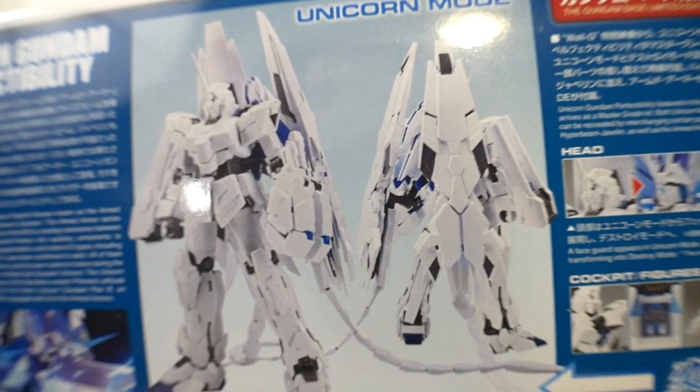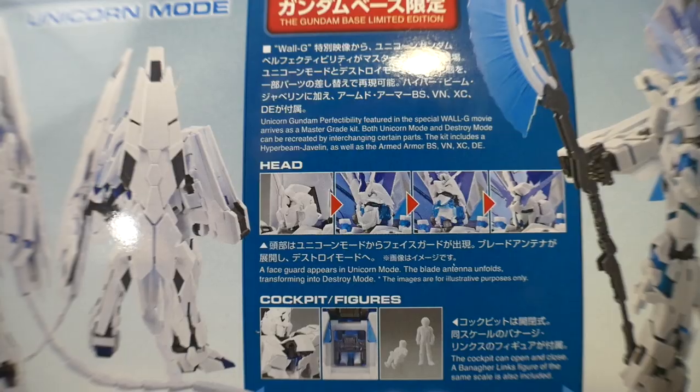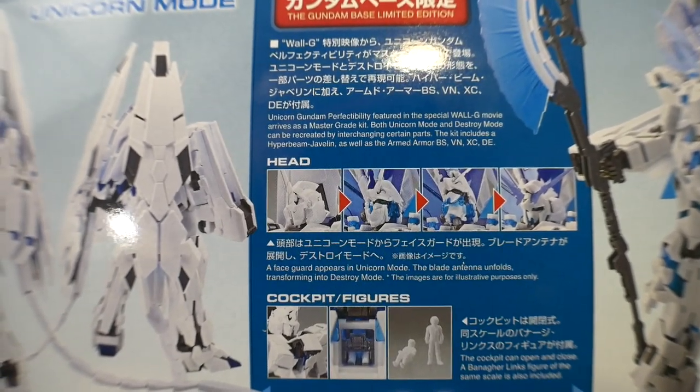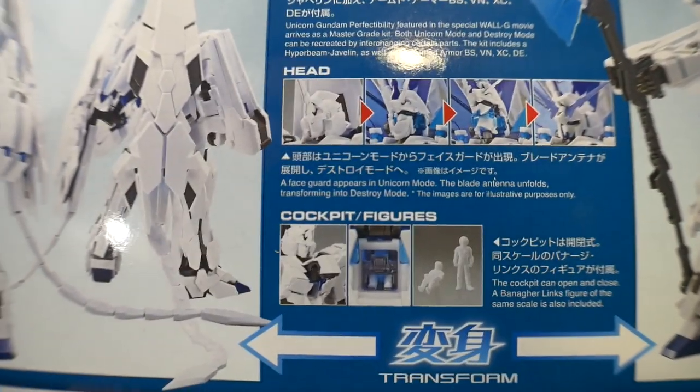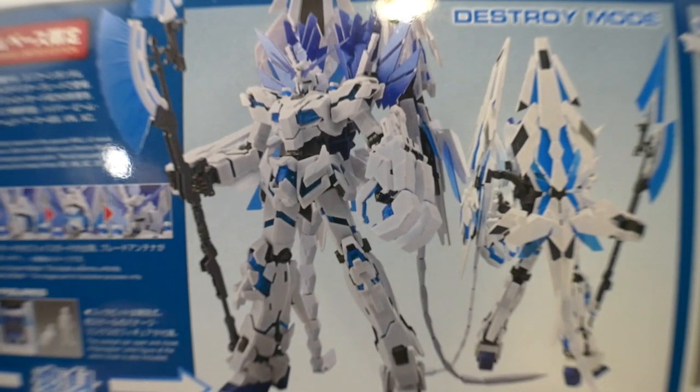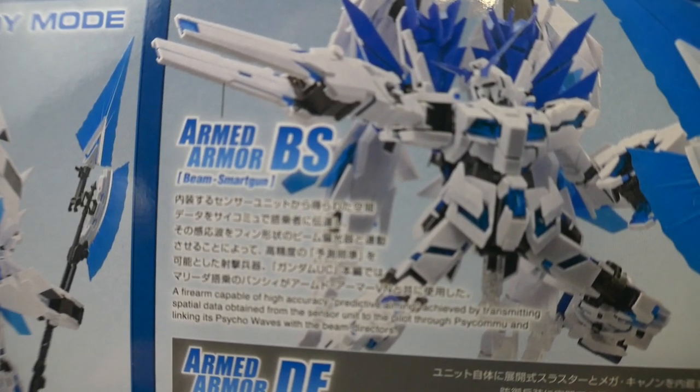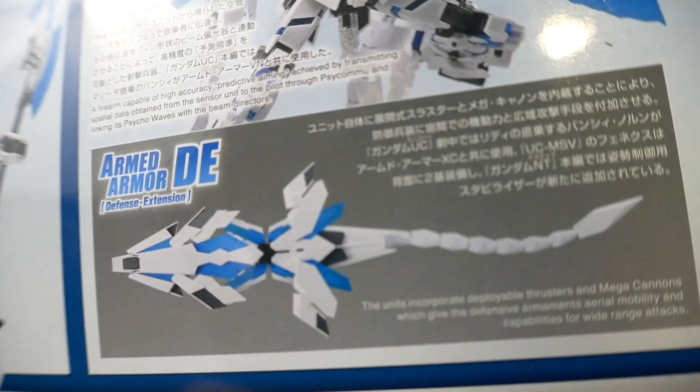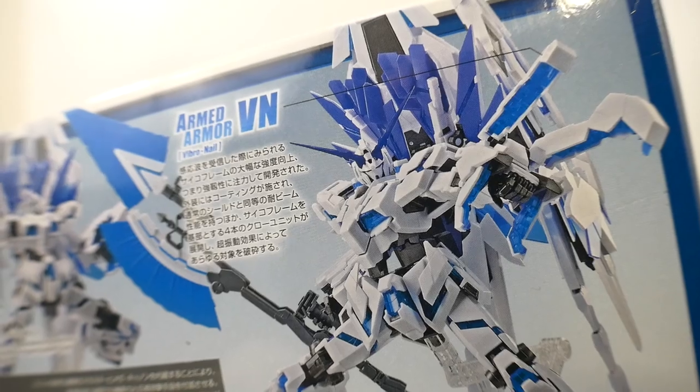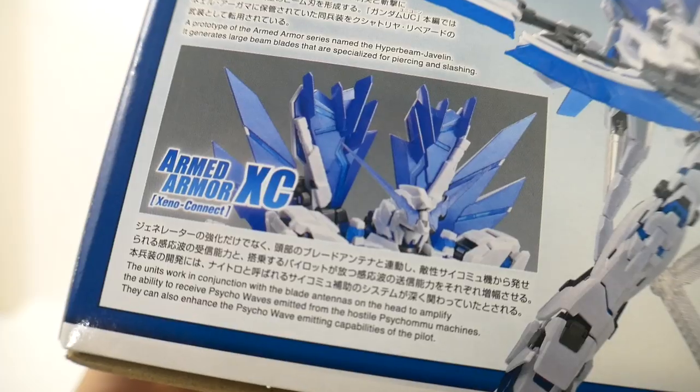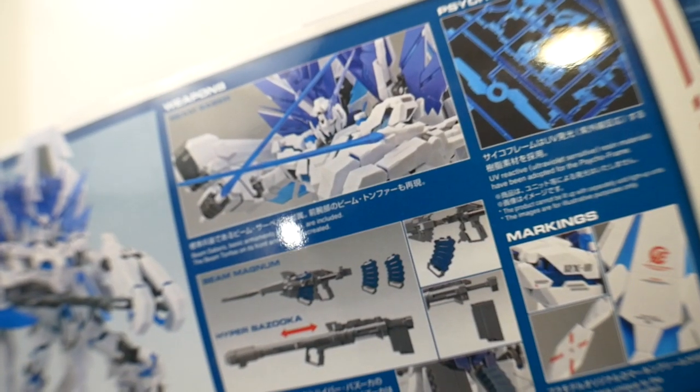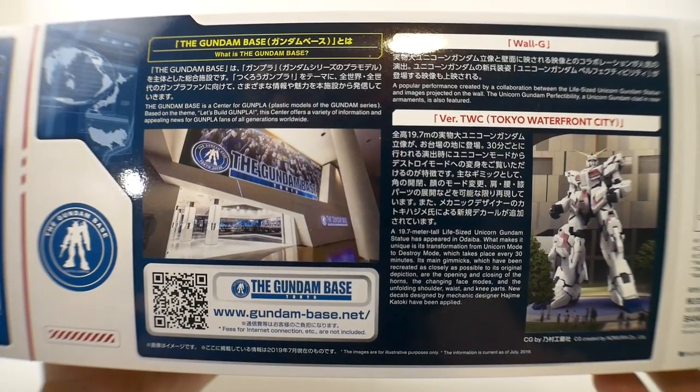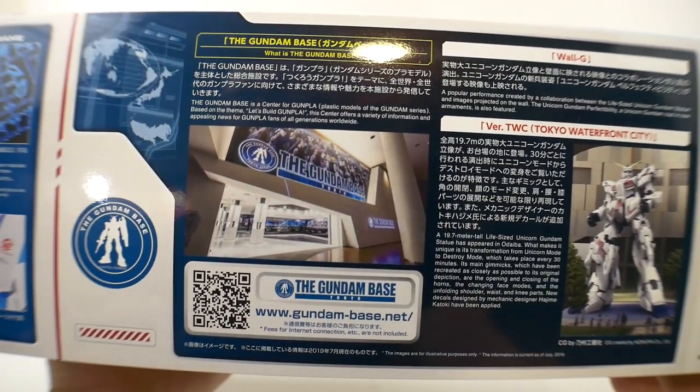And here's some information about the suit right here. You can get a beautiful look at the unicorn mode right here on the side of the box. And some information on the kit, such as the transformation of the head, as well as the cockpit figures. And here you're going to get a nice shot of the destroy mode. What's going to be included in the box is the beam smart gun, the armed armor DE, the defense extension, the vibro nail, the hyper beam javelin, the xeno connect, and some of the basic weaponry. And lastly on this side of the box, you're just getting some information about Gundam Base Tokyo.